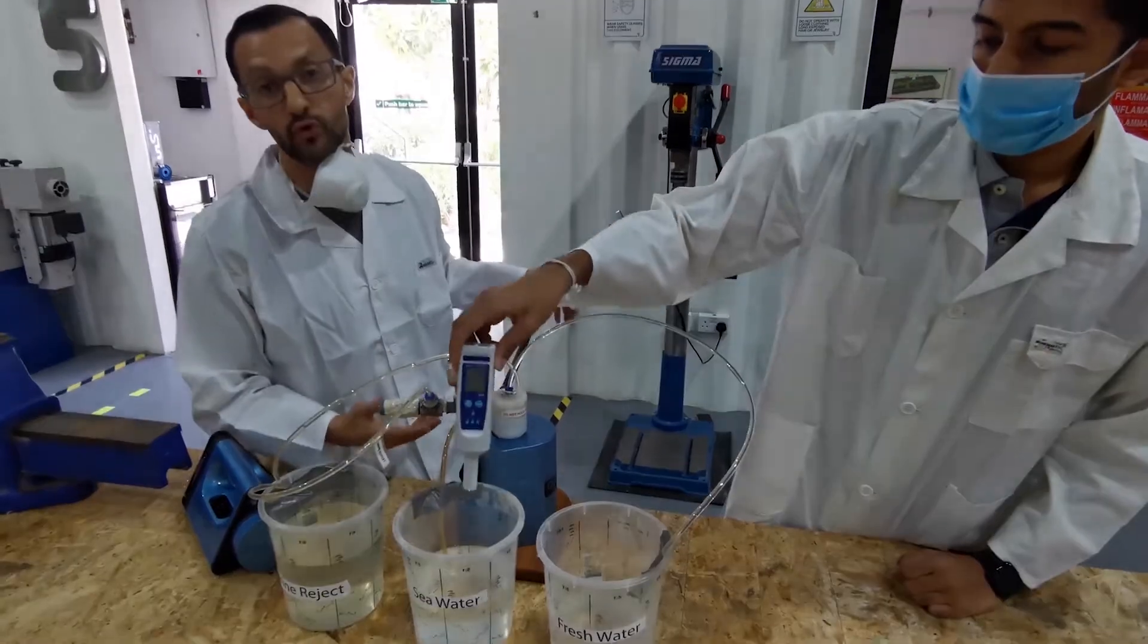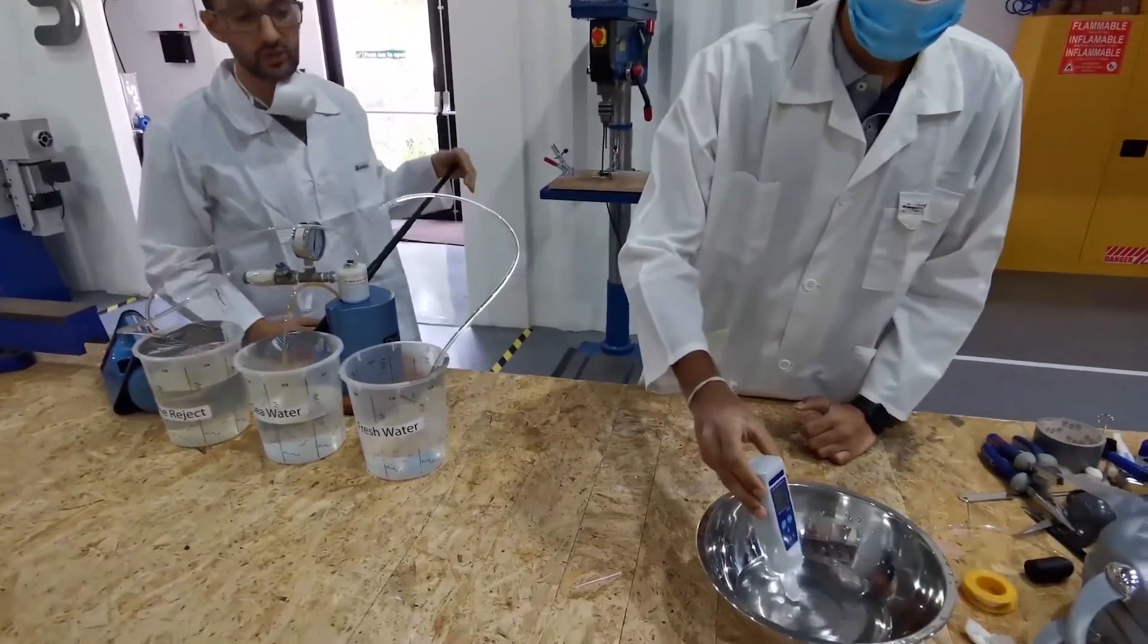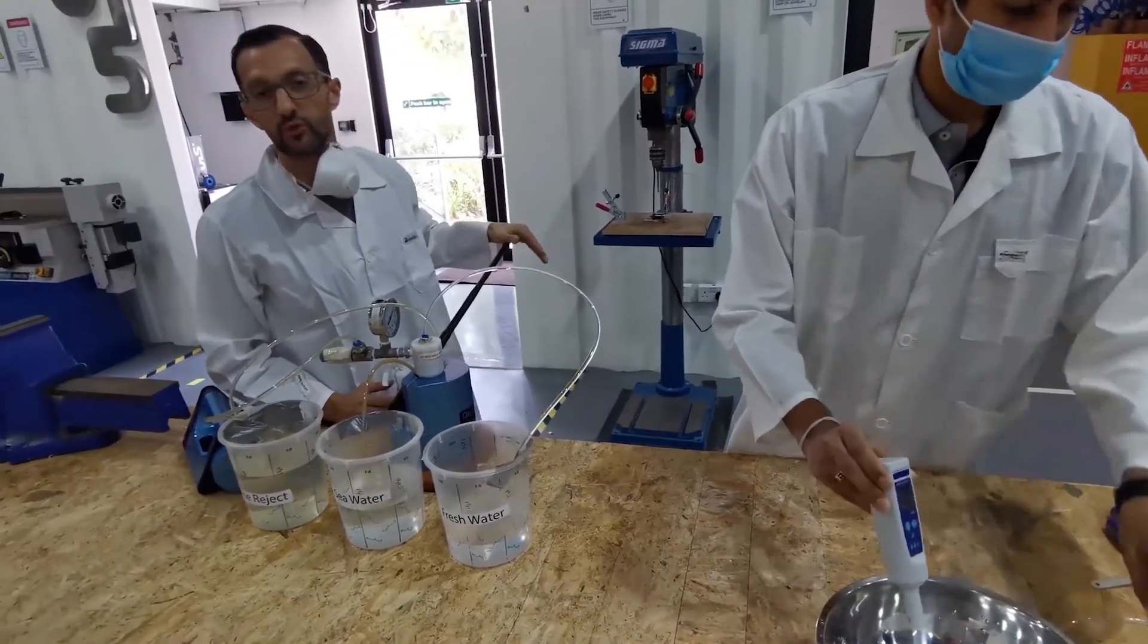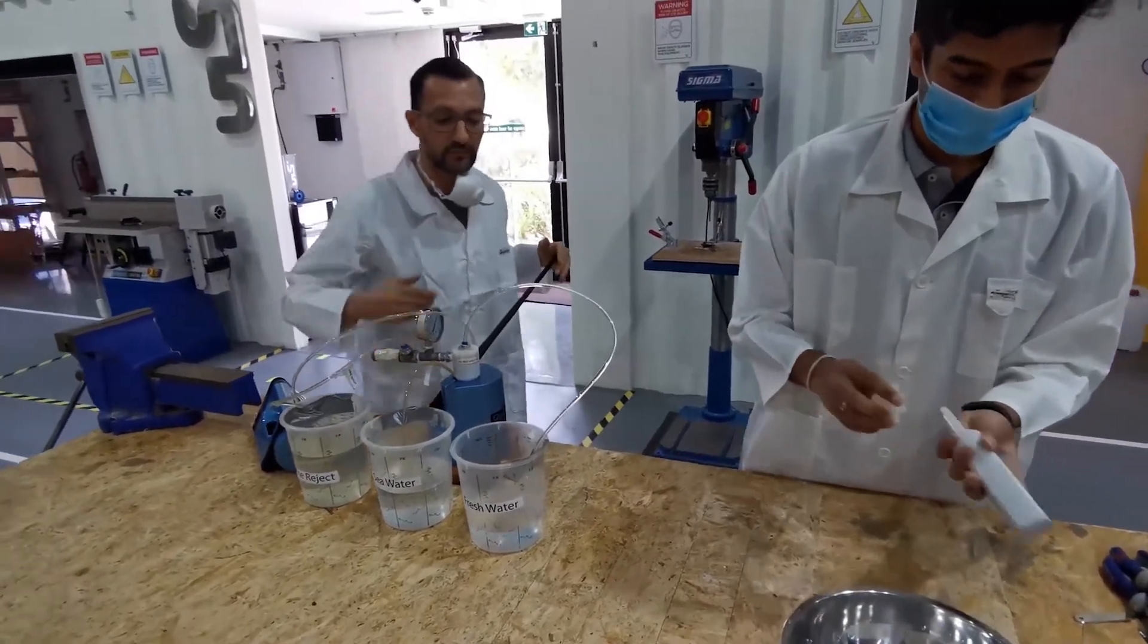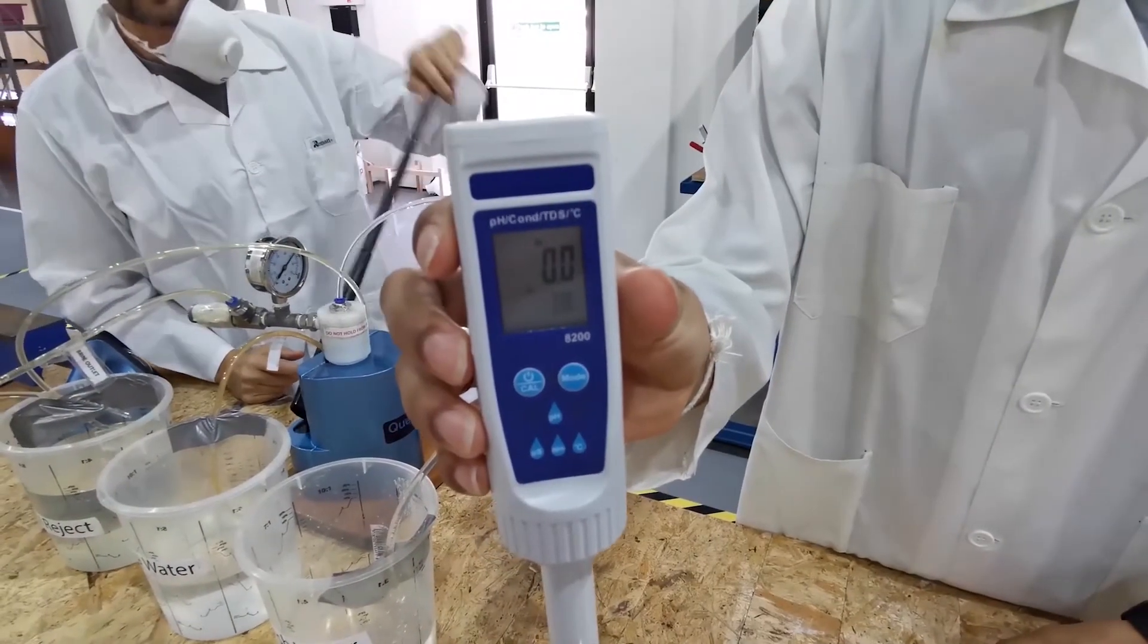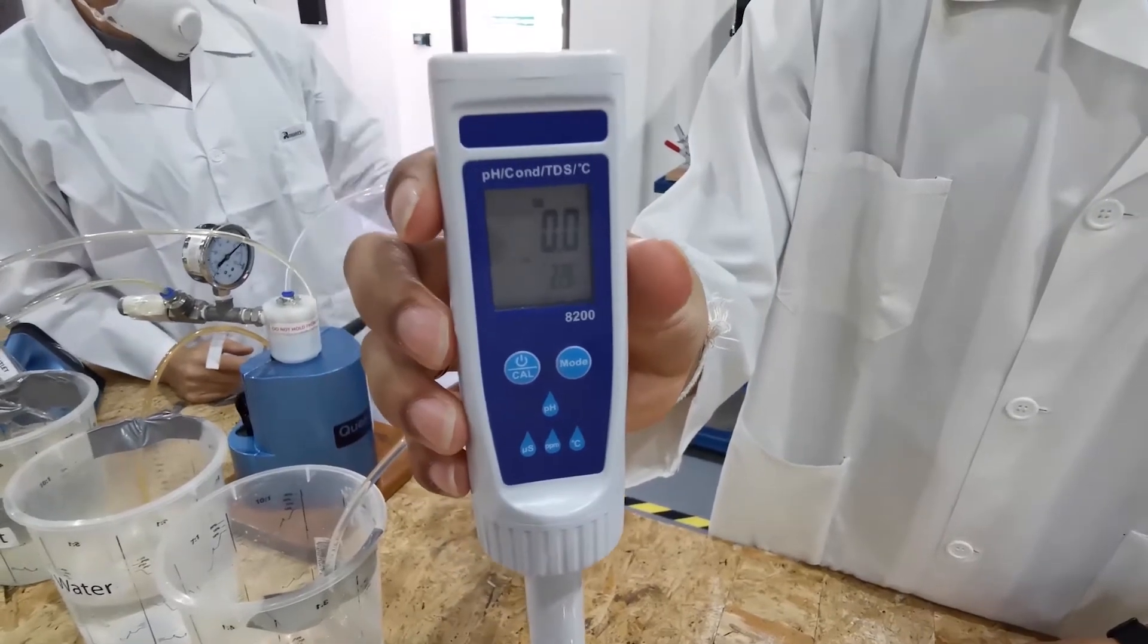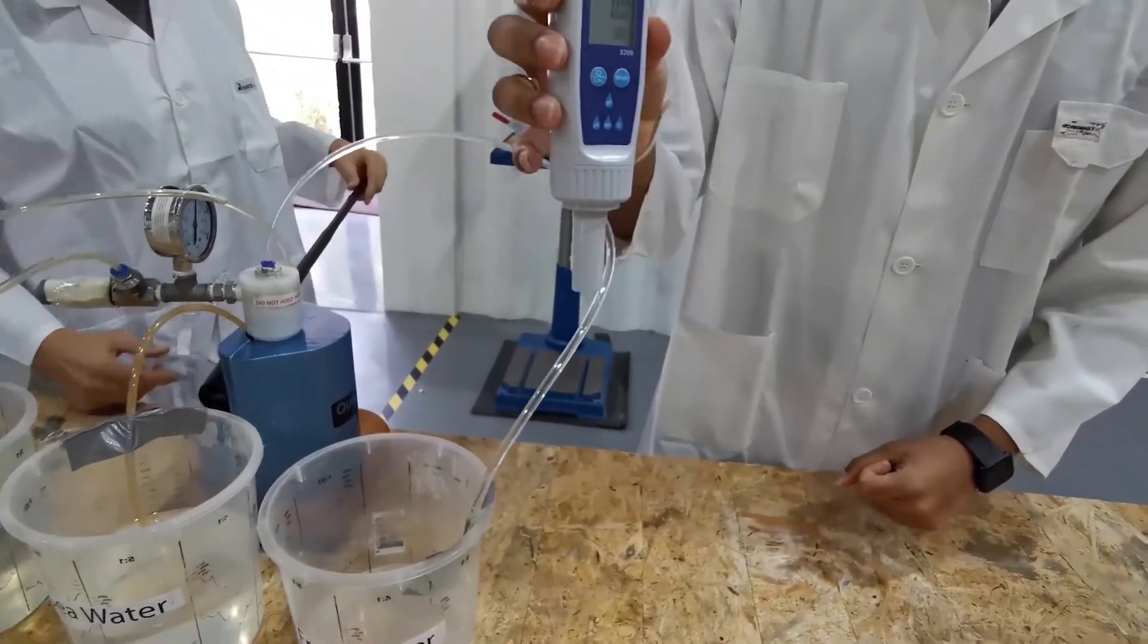Now we're going to just clean the TDS meter to test what does the freshwater. We're only measuring today just the TDS, but we've also got lab reports measuring the pH, the biological, a full lab analysis. This water, this is to prove that it's not modified, it's back to zero.